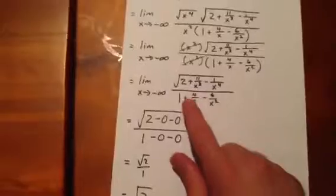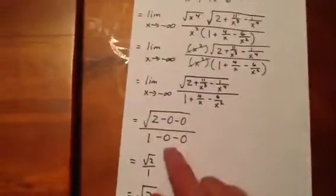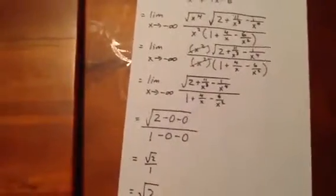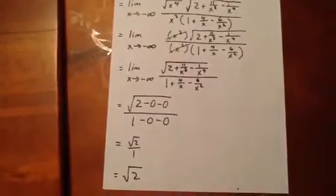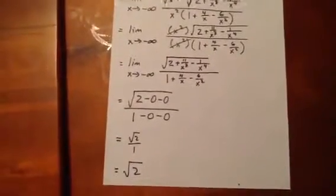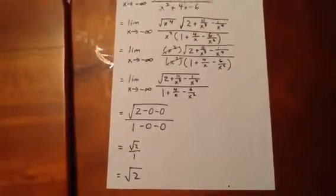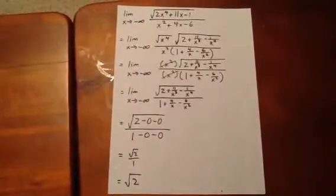In the denominator, we see that each of these quantities will become infinitely close to 0 as x goes towards negative infinity. And so what we get is the square root of 2 minus 0 minus 0 over 1 minus 0 minus 0.